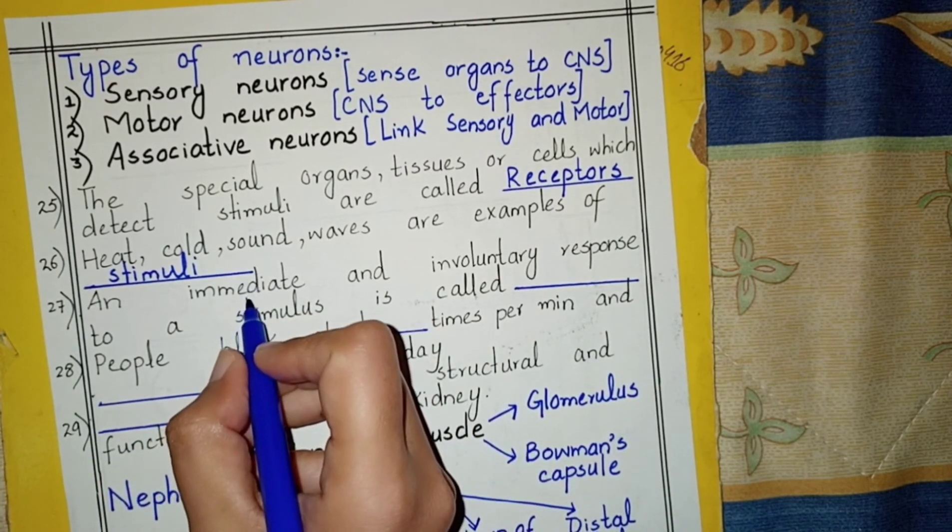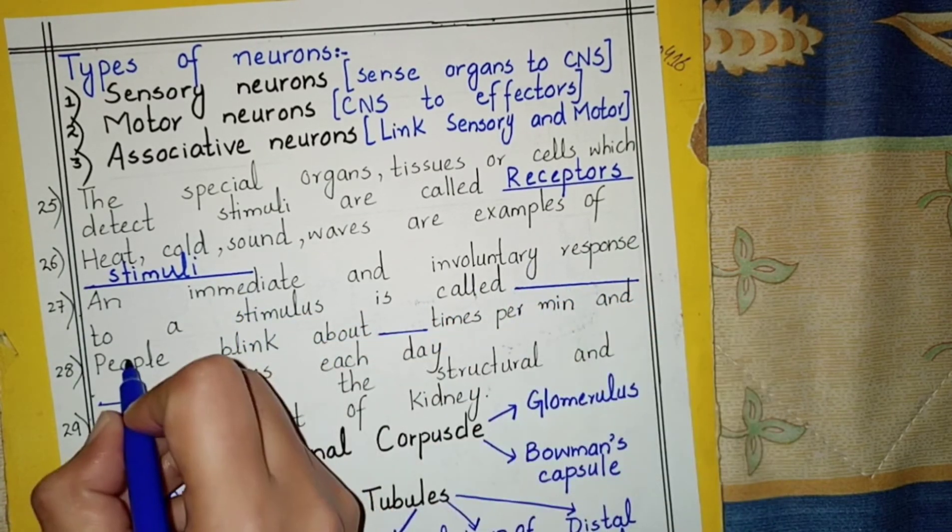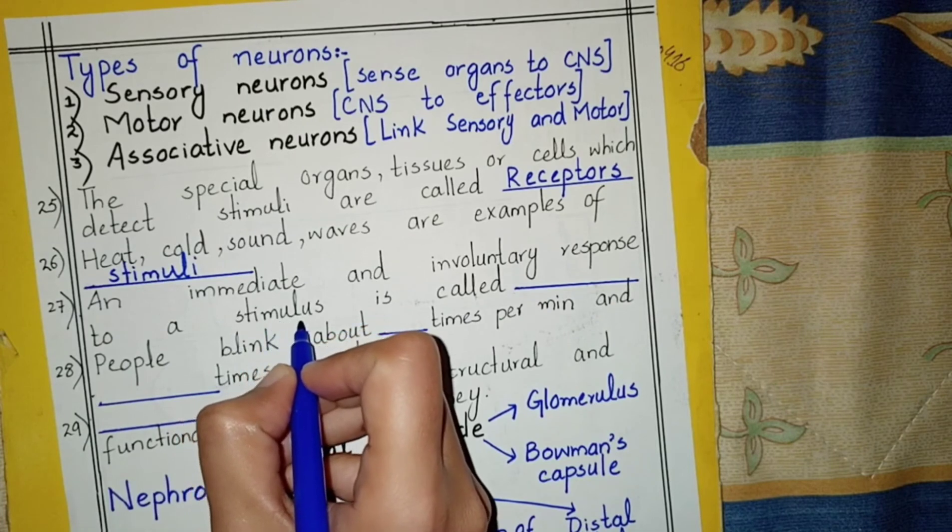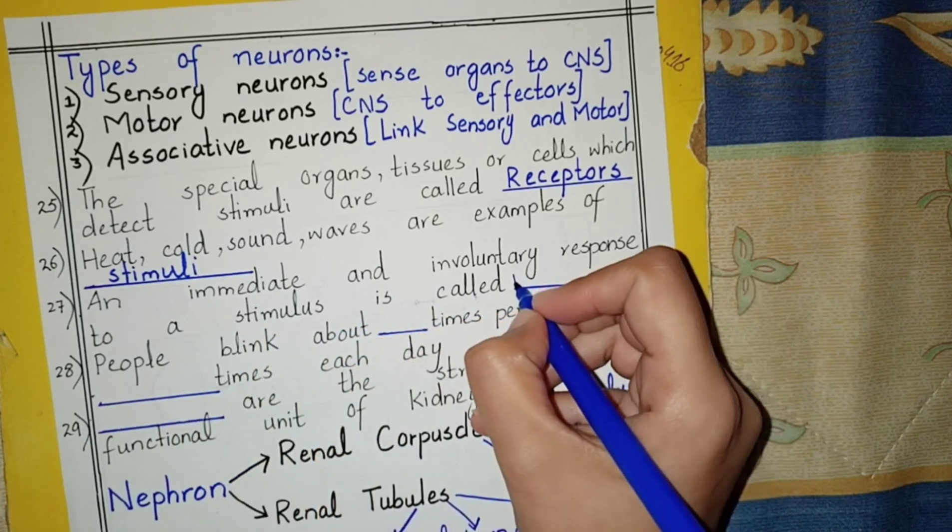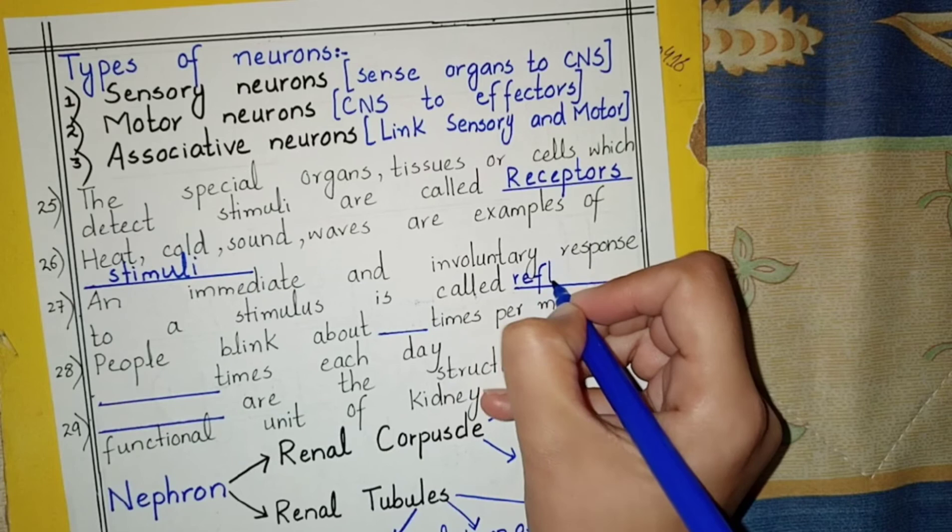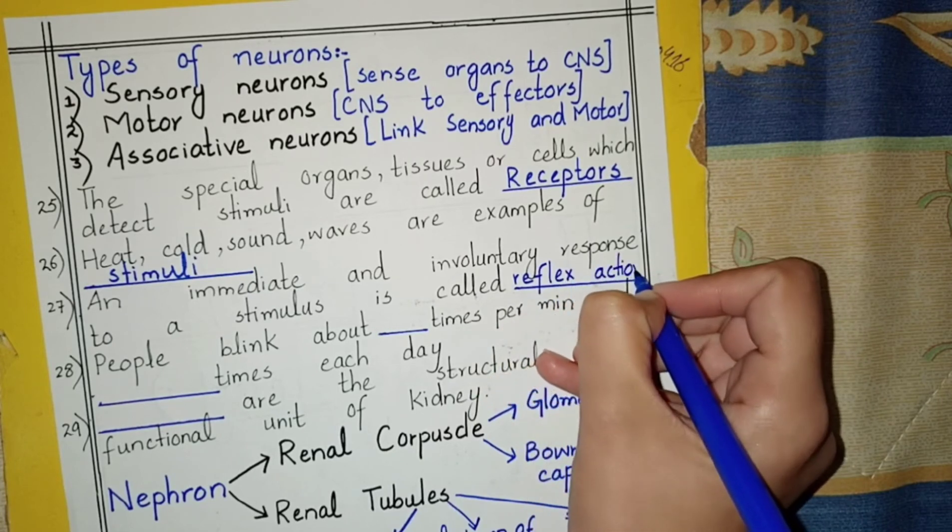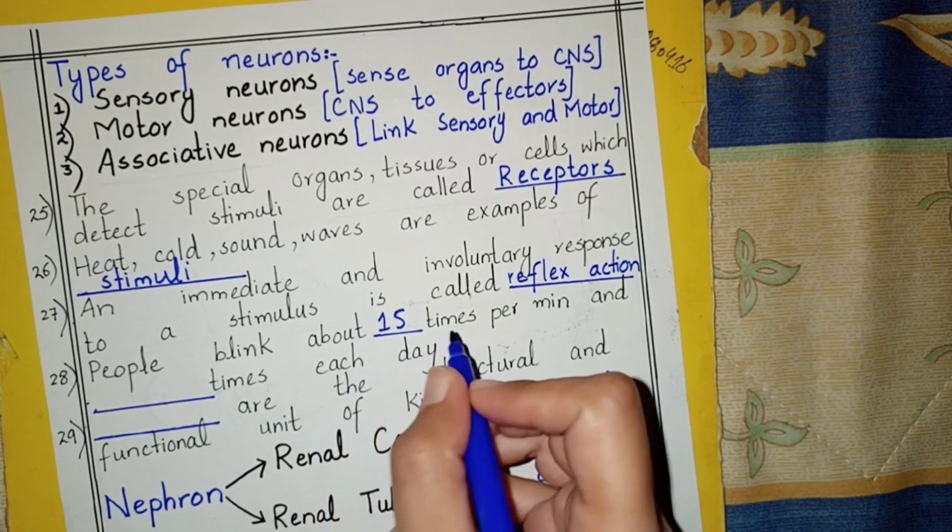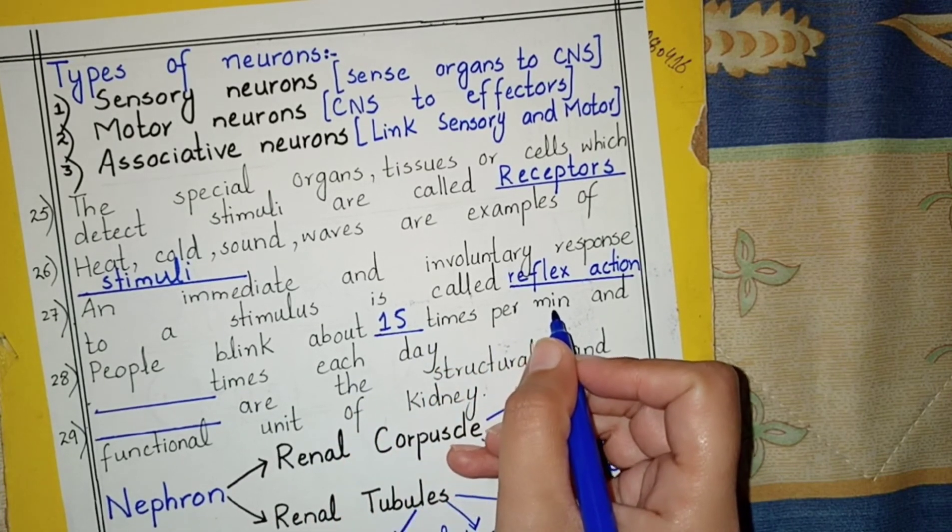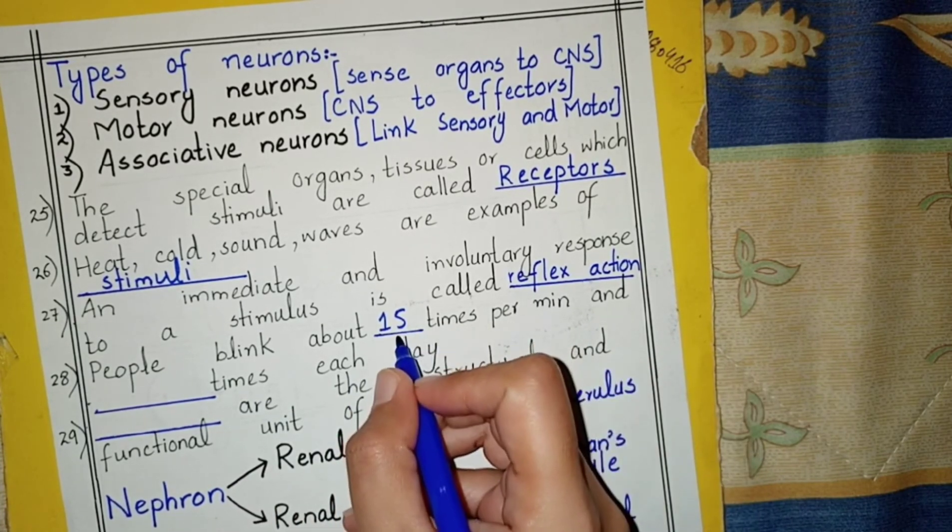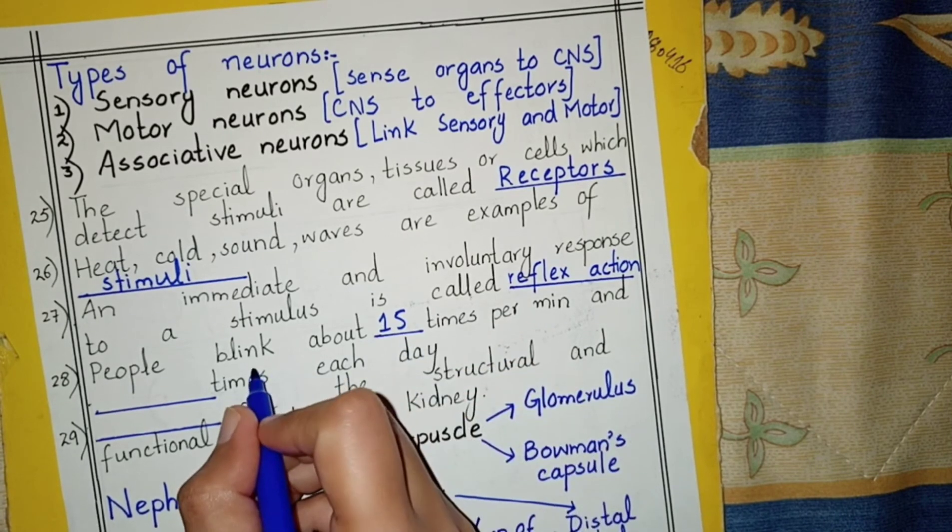An immediate and involuntary response to a stimulus is called reflex action. People blink about 15 times per minute and 14,400 times each day.